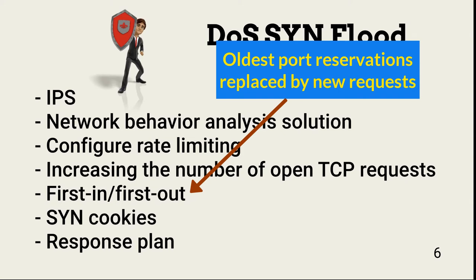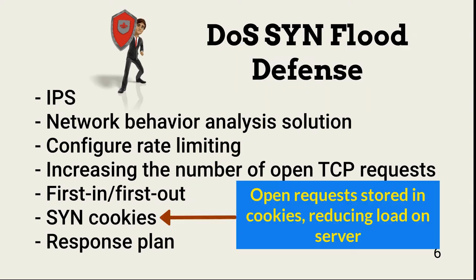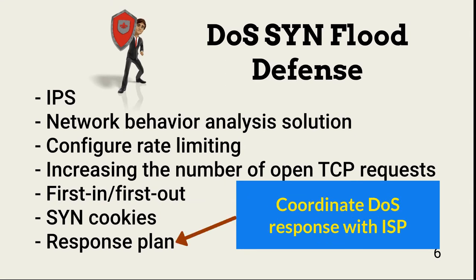We'll see why when we look at distributed denial of service attacks. SYN cookies remove open requests from the backlog queue and place them in cookies. The cookie content is used when the requester sends its final ACK packet. This helps keep the backlog queue clear. Finally, coordinating with ISPs to develop and test a denial of service response plan.